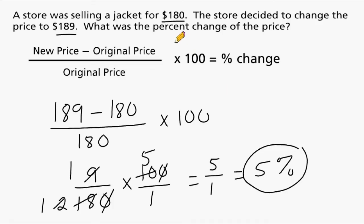Well, we can clearly see that from the original problem here. It says the jacket was 180 and it went up to 189. So just by reading the problem, we know that our result is going to be a percent increase in this case. Alright, let's go ahead and do another example.